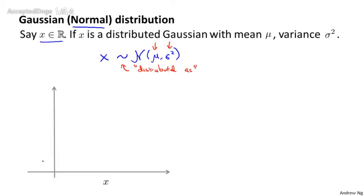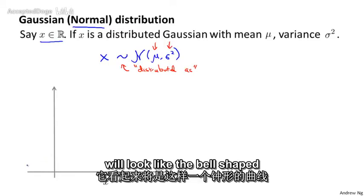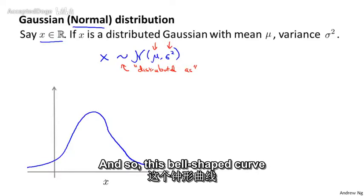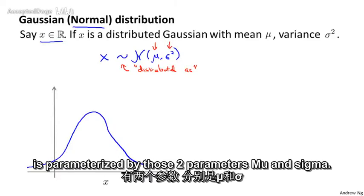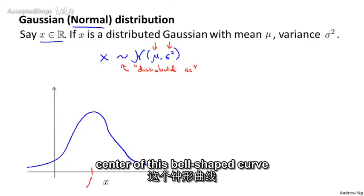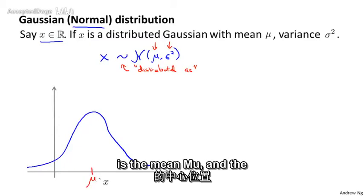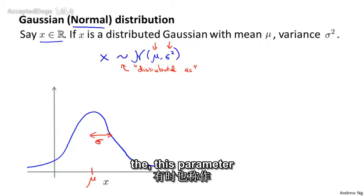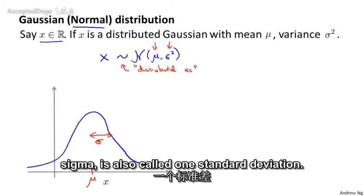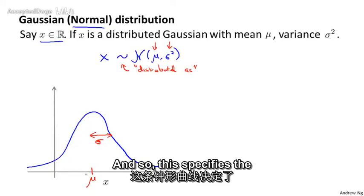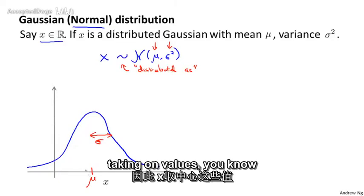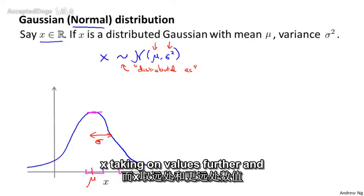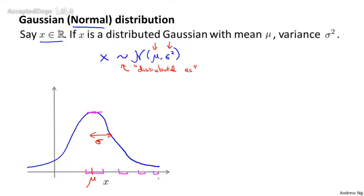If we plot the Gaussian distribution — the Gaussian probability density — it looks like the bell-shaped curve you may have seen before. This bell-shaped curve is parameterized by mu and sigma. The location or center of the bell-shaped curve is the mean mu, and the width of the bell-shaped curve is the parameter sigma, also called one standard deviation. This specifies the probability of x taking on different values: values in the middle have high probability, while values further away have diminishing probability.